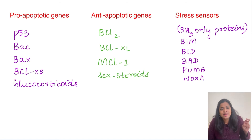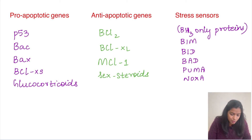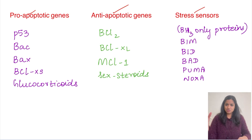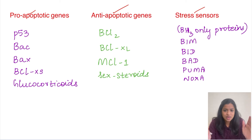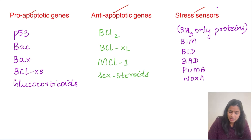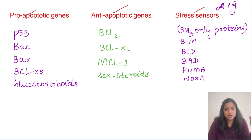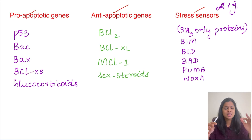Apoptosis is a programmed cell death tightly controlled by certain pathways and genes. We have pro-apoptotic genes, anti-apoptotic genes, and stress sensors called BH3-only proteins. It is the balance between these three that helps the cell maintain homeostasis. In a normal cell, anti-apoptotic genes are upregulated and pro-apoptotic genes are downregulated. When the cell undergoes stress, BH3-only proteins detect it and shift the balance toward apoptosis.